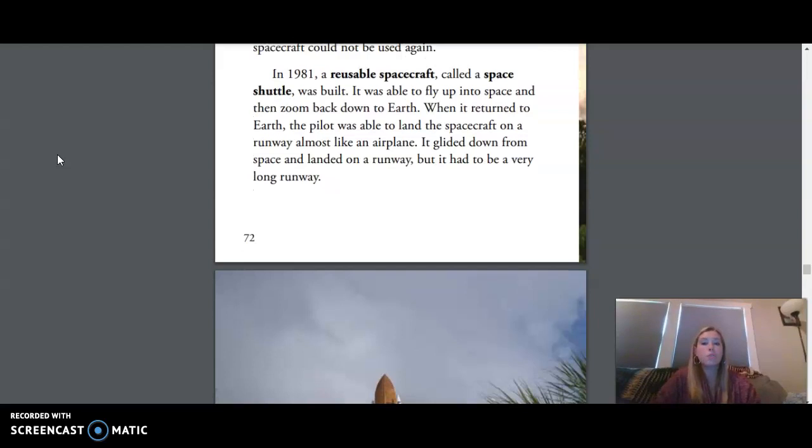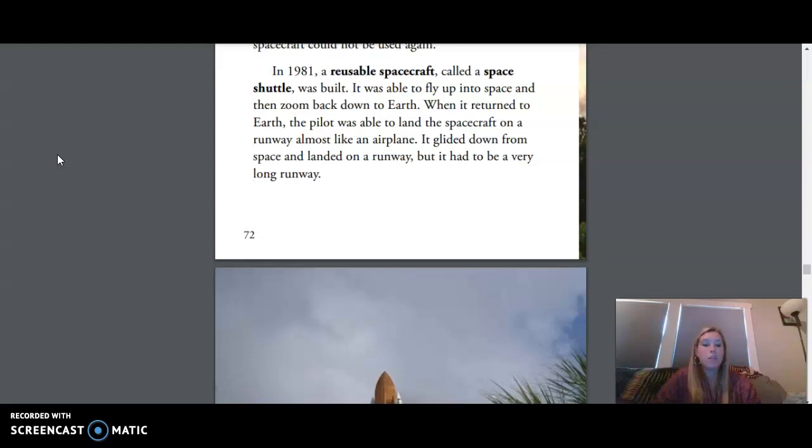In 1981, a reusable spacecraft called a Space Shuttle was built. It was able to fly up into space and then zoom back down to Earth. When it returned to Earth, the pilot was able to land the spacecraft on a runway, almost like an airplane. It glided down from space and landed on a runway, but it had to be a very long runway.